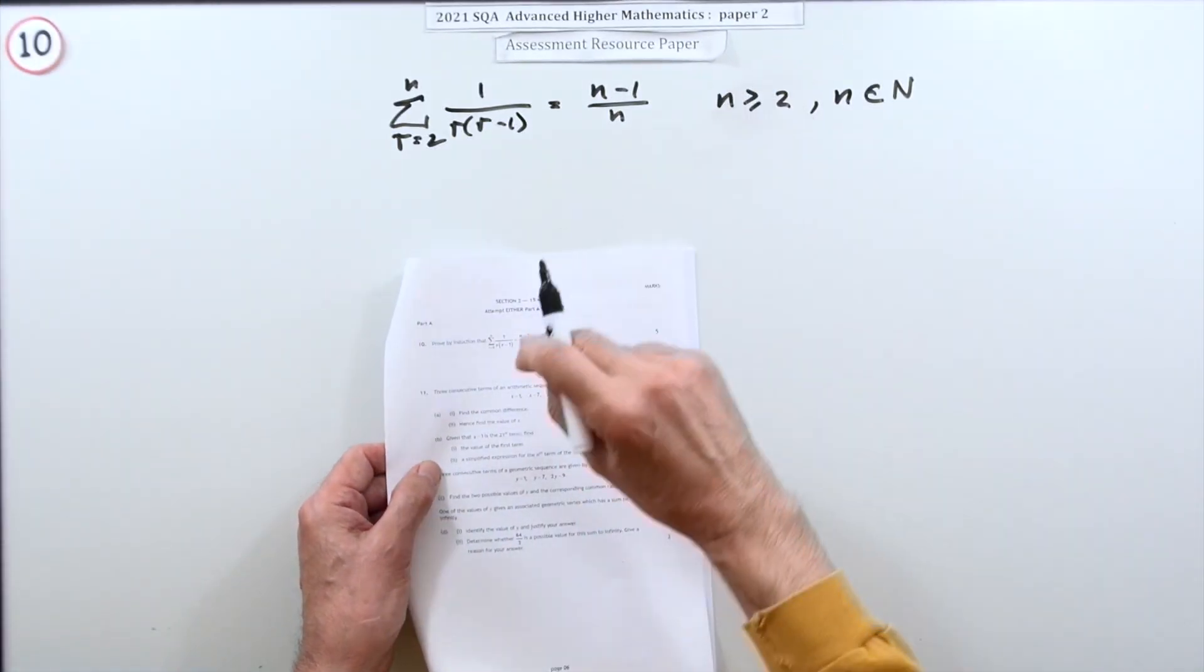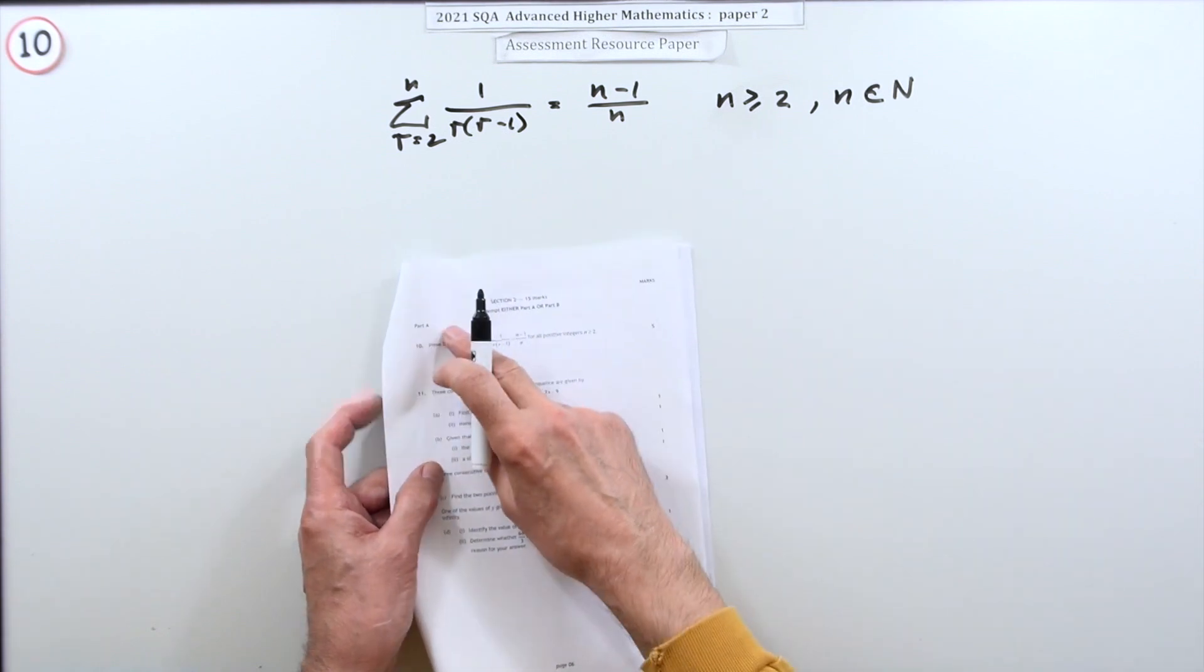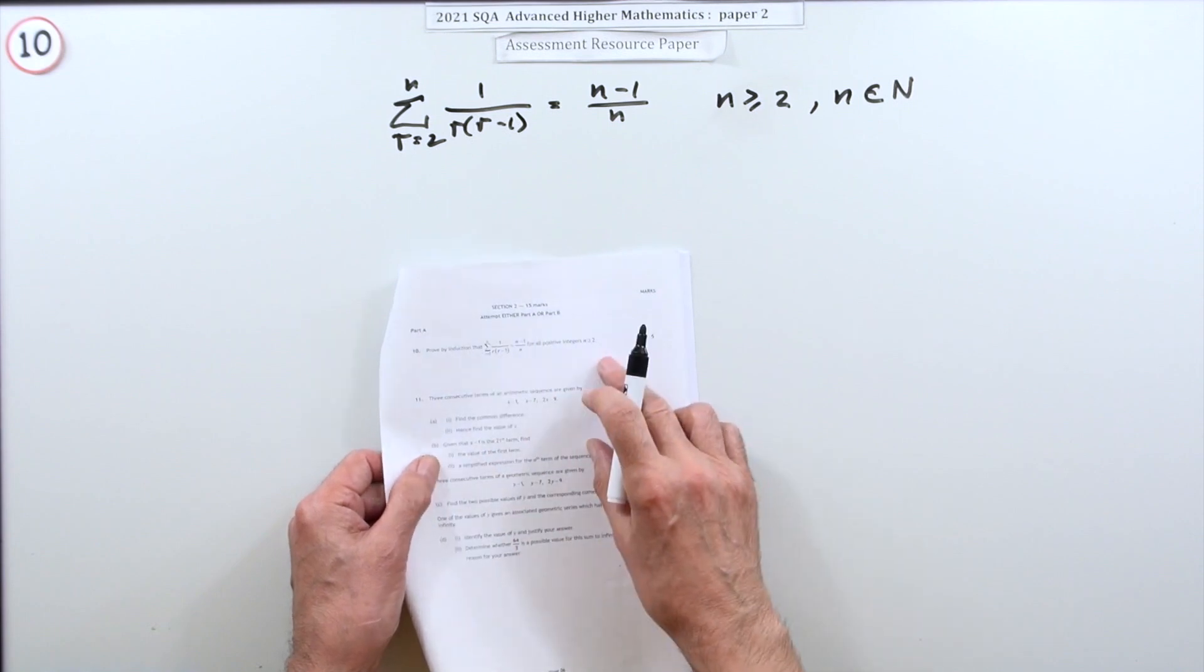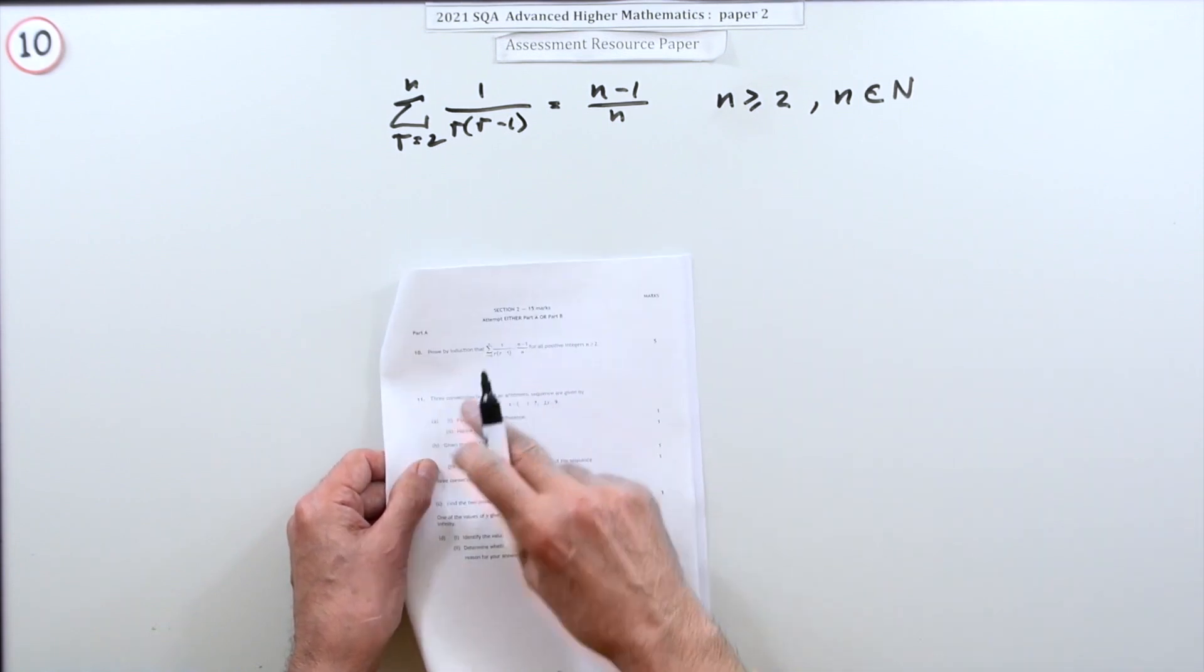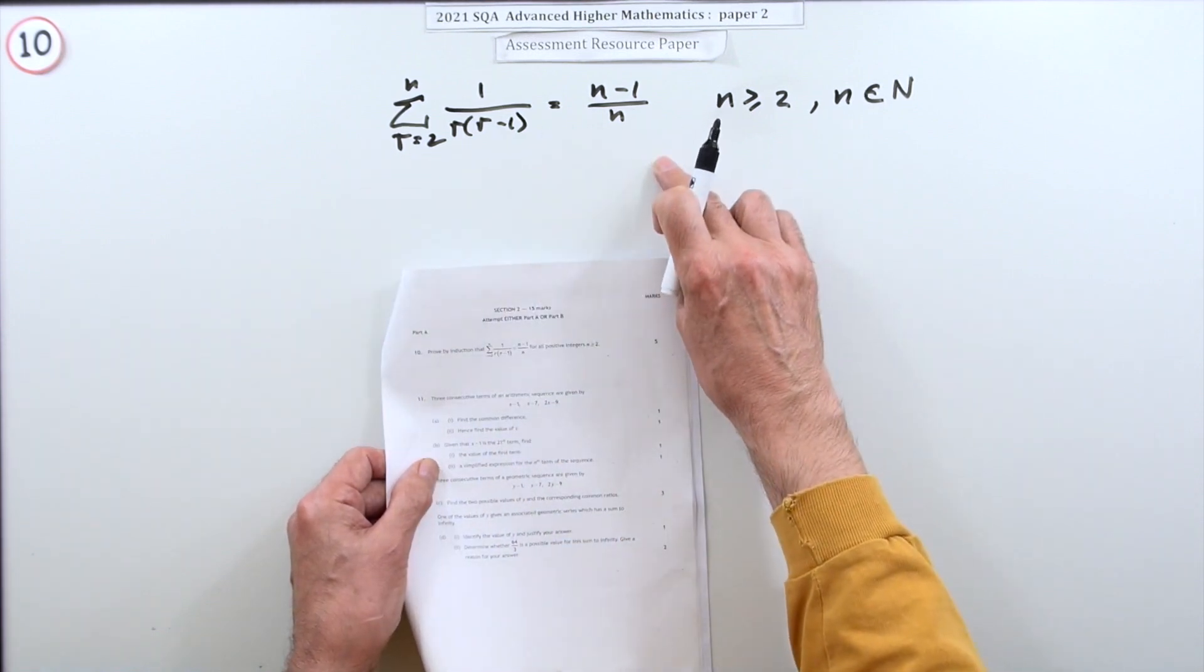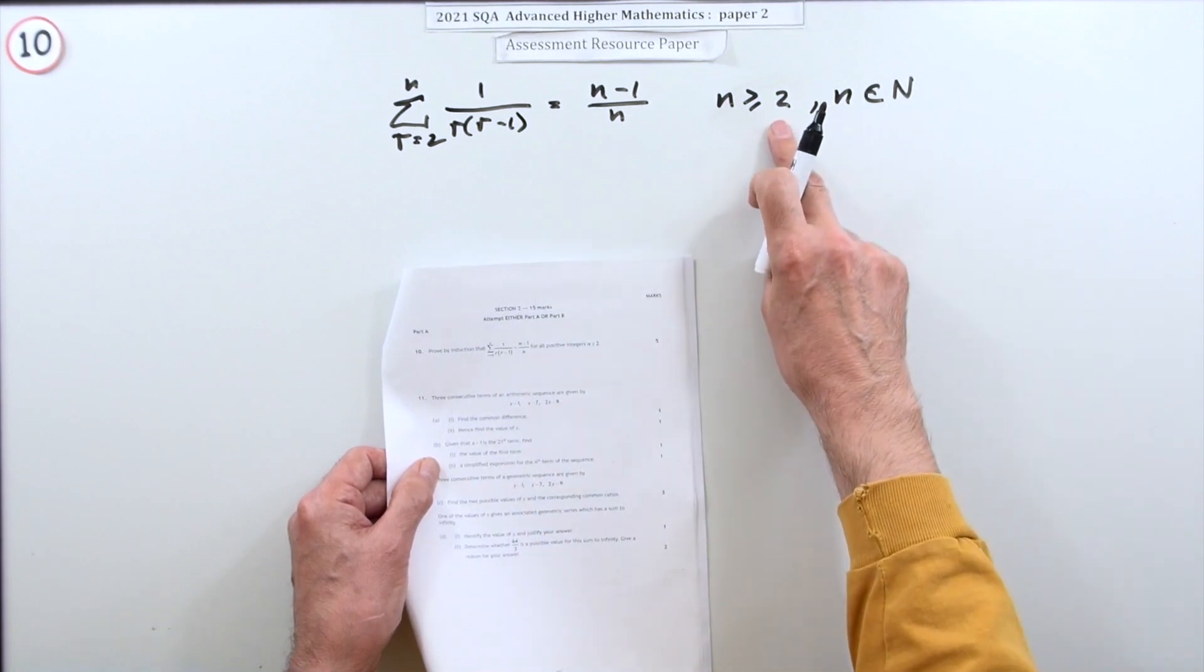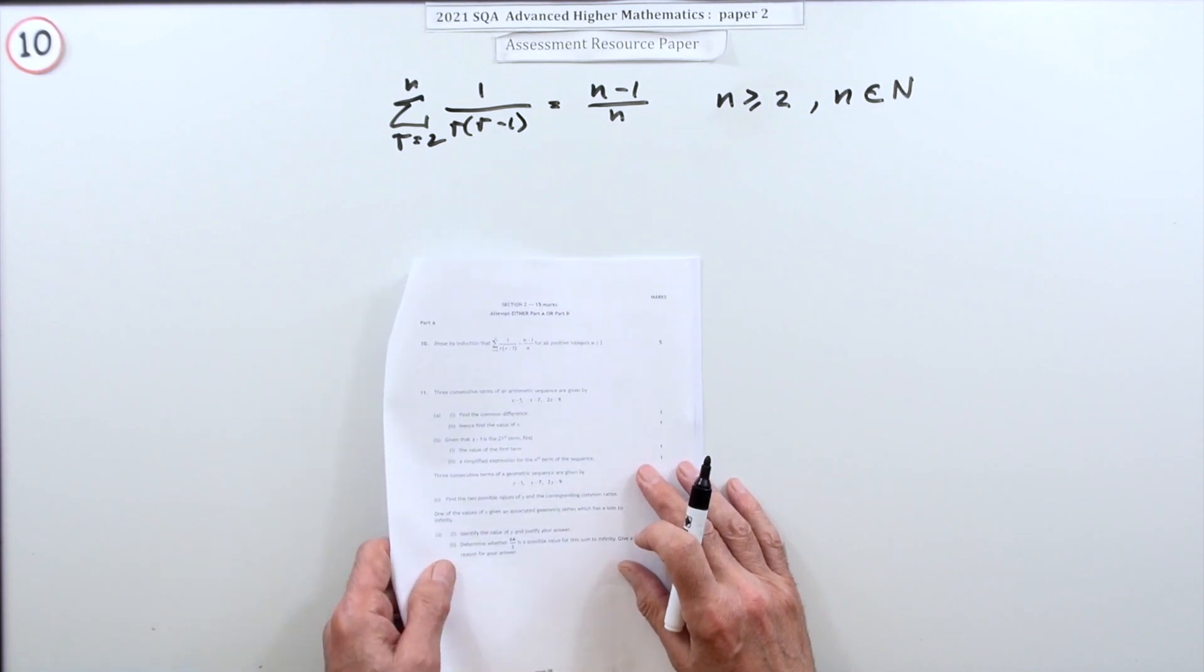This is number 10 from paper 2 of the 2021 Advanced Higher resource paper. Proof by induction for five marks. You have to prove that this is true for all positive integers greater than or equal to two, which is effectively natural numbers greater or equal to two.